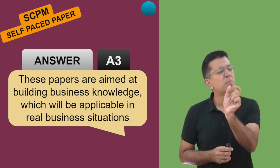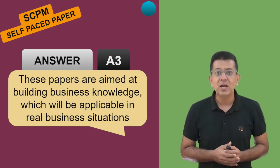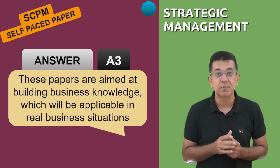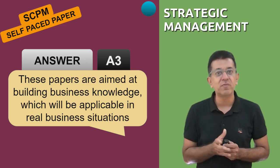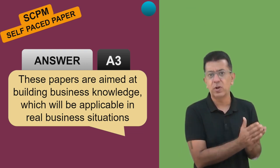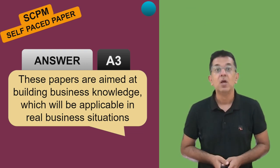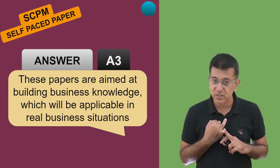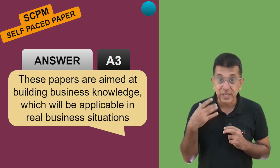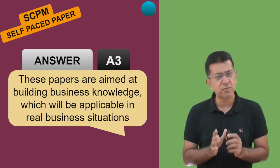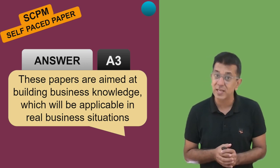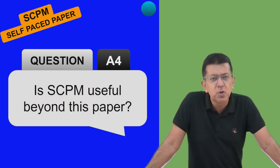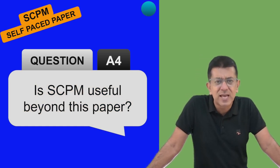Whatever things you require in business - part of that you've done in costing before, but only three to four percent. You had one paper called Strategic Management SM, around five to ten percent done there. So ten to fifteen percent you've done before, but the remaining 85 percent you will be getting through this paper. That is the aim - so you can handle your own business in future, handle somebody else's business as a CEO, and so on.